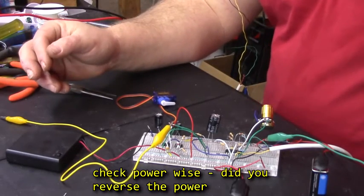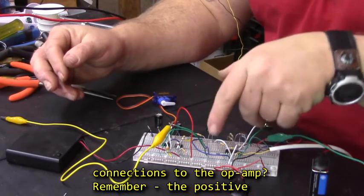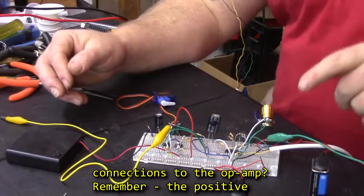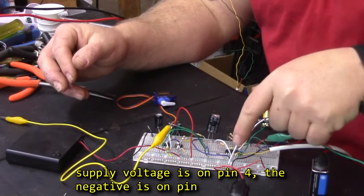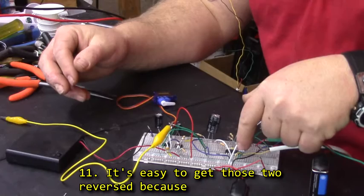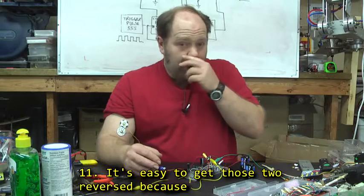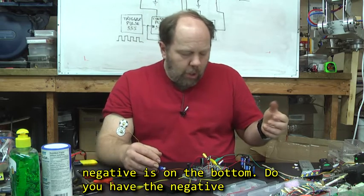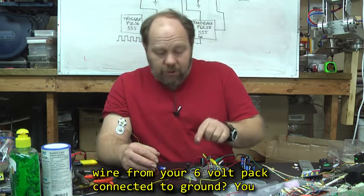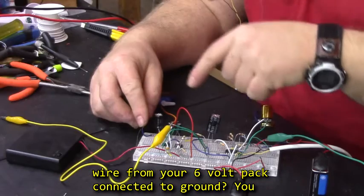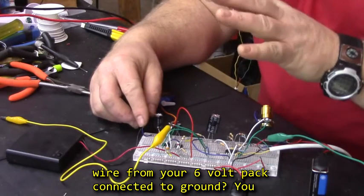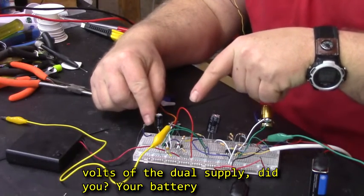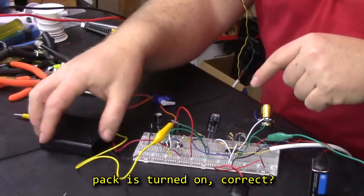Second thing to check power-wise, did you reverse the connections on the op-amp. Remember, the positive supply is on pin 4, the negative is on pin 11. It's easy to get those two reversed because most microchips the positive is on the top, negative is on the bottom. Do you have the negative wire from your 6 volt battery pack connected to ground? You didn't accidentally connected to the negative 9 volts of the dual supply, did you? And your battery pack is turned on, correct?